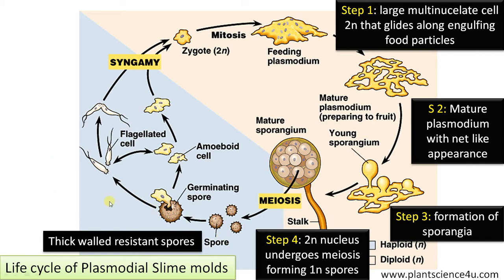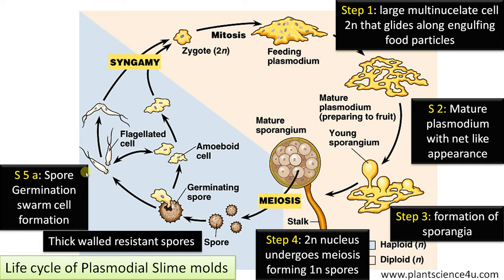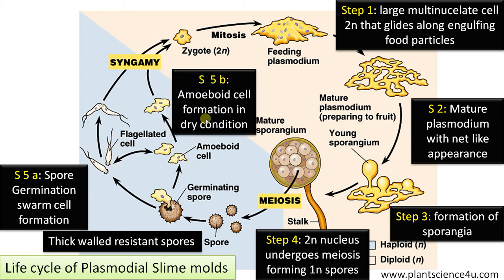On the return of favorable conditions, the spores germinate, either forming swarm cells — which are flagellated cells — or forming amoeboid cells. Swarm cells are produced when there is enough moisture, while in dry conditions, amoeboid cells are formed.